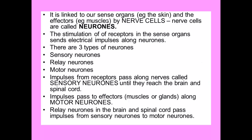Our sense organs are linked to effectors by nerve cells, which we call neurons — you can spell neuron with or without an E. The stimulation of receptors sends electrical impulses along neurons, and we have three types: sensory, relay, and motor. Impulses from receptors pass along sensory neurons until they reach the brain and spinal cord. Impulses pass to effectors along motor neurons, and relay neurons make the join between sensory and motor neurons, relaying the signal between them.